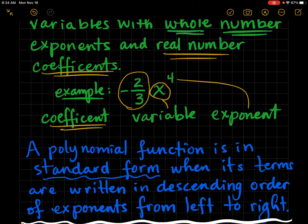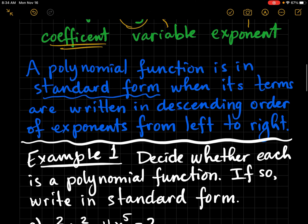A polynomial function is in standard form when its terms are written in descending order of exponents from left to right. So you want the highest exponent to go first and go down from left to right.